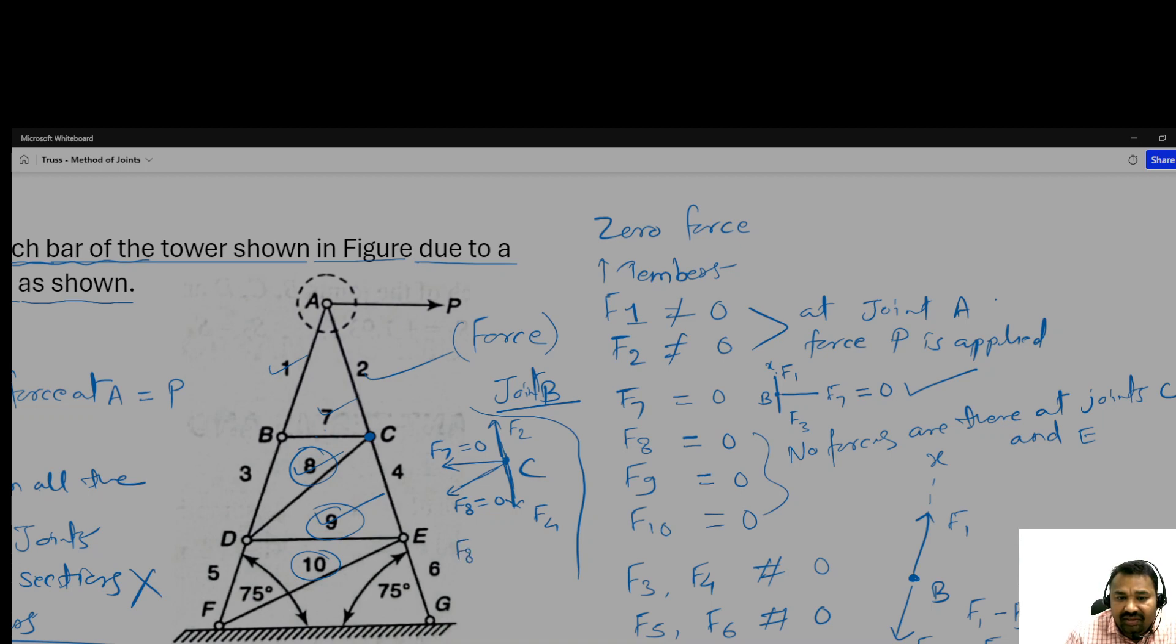Suppose F8x, what will be F8x? This is F8 at some angle theta, so F8 cos theta. We apply equilibrium conditions: summation of Fx equals zero. We have only one component, F8 cos theta equals zero, so F8 equals zero.